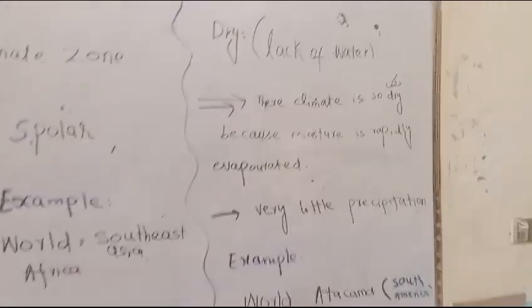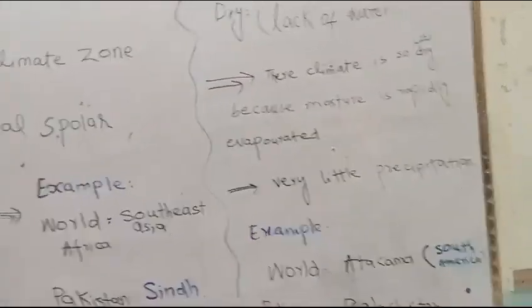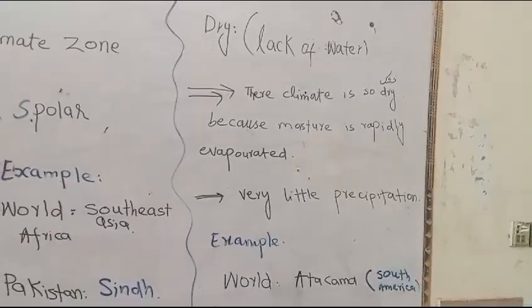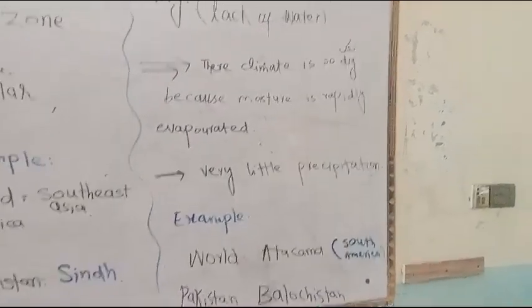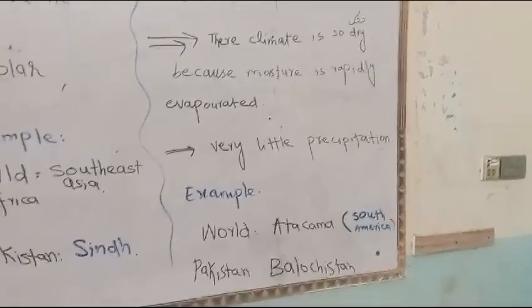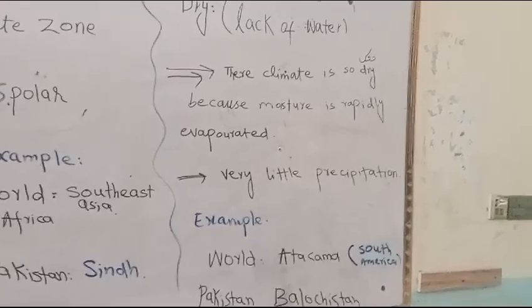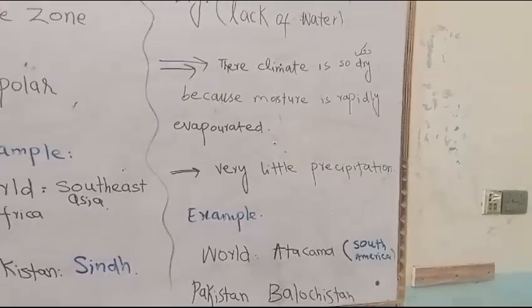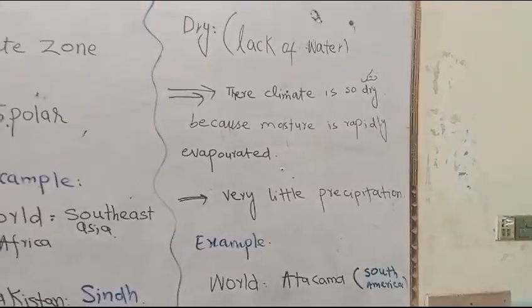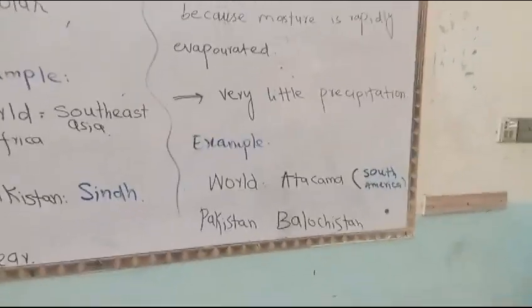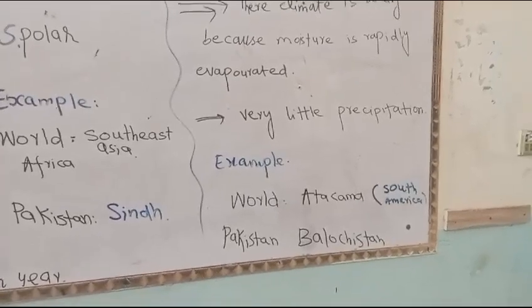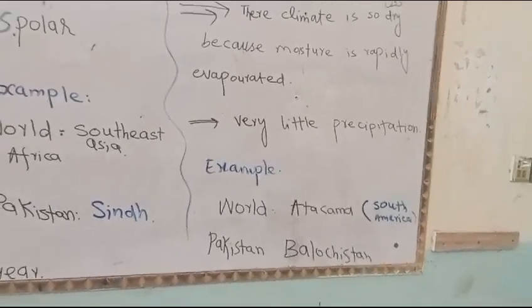The other region is the dry zone. This zone has a lack of water — it is very dry. There is very little precipitation here, and the rain is very low.